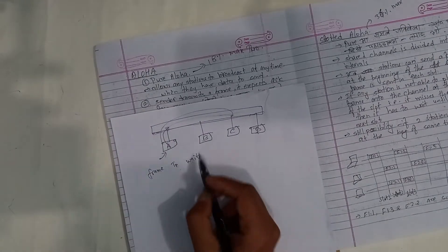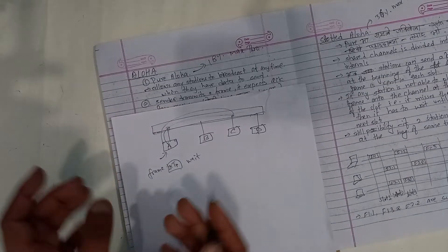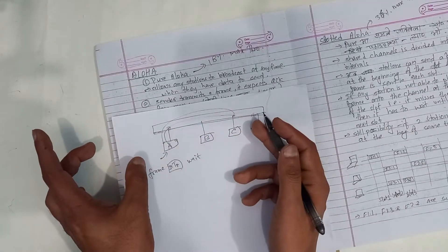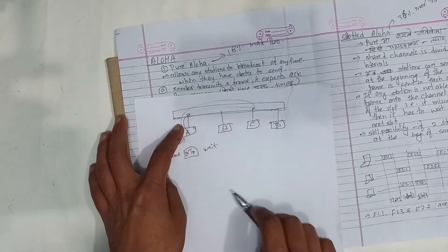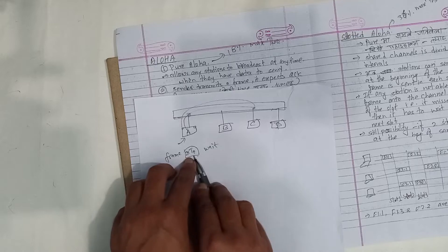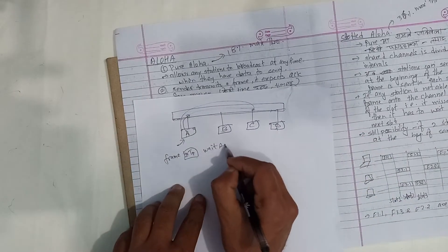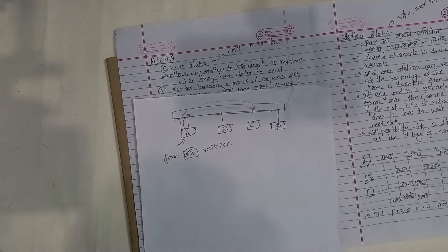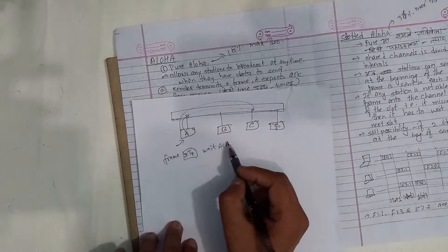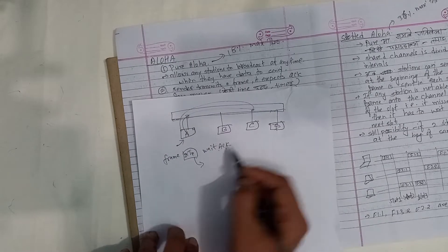The transmission time is 2 × TP. When a frame is sent, you wait for the acknowledgement. If the acknowledgement comes within two times the transmission time, that means success — data was sent successfully.